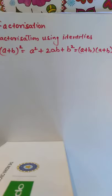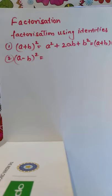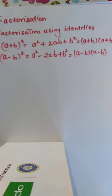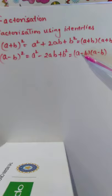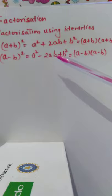When the product form is given, we can factorize using the a plus b whole square identity. The second identity is a minus b whole square, given as a squared minus 2ab plus b squared, which can be written as a minus b into a minus b. This expression can be factorized into this form. There are three terms, so it is a trinomial — a trinomial can be expressed as the product of binomials.